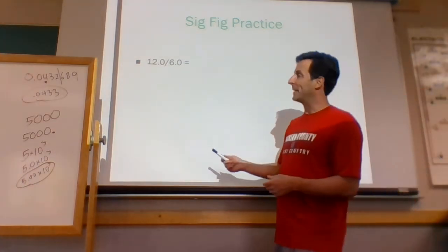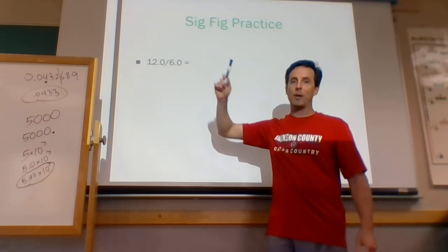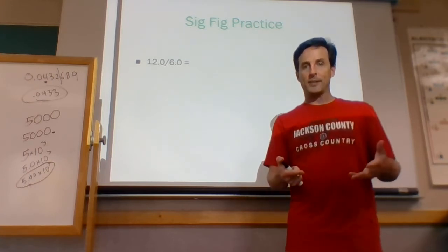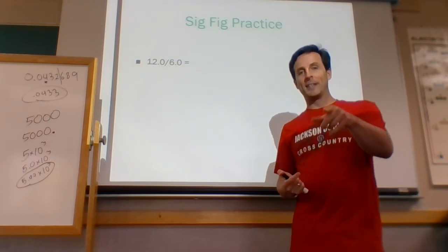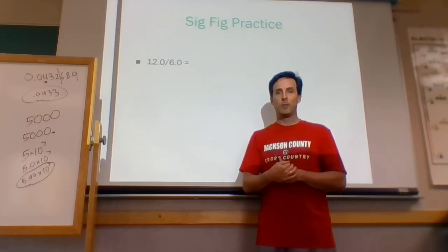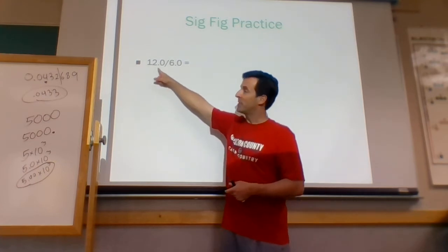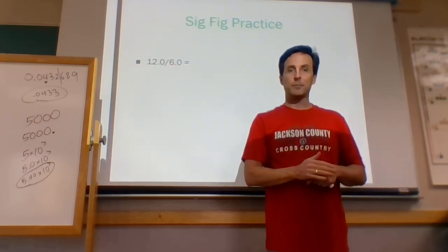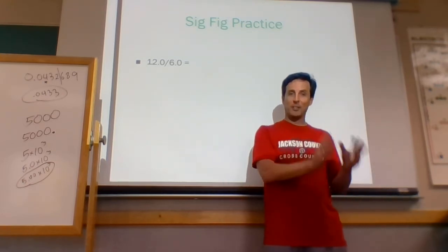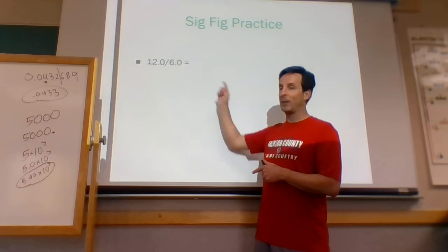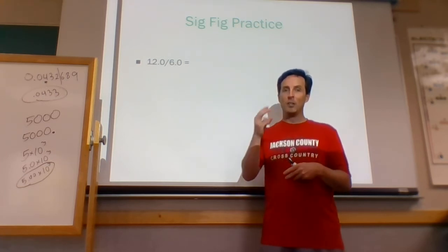If I type 12.0 divided by 6.0 into my calculator, it doesn't know how to report the answer — it's just going to give you the best answer it can. Your calculator will give you just 2. If you wrote that as the answer, you'd be wrong. The first number has 3 sig figs, the second has 2 sig figs, so when I divide them my answer should have 2 sig figs. My calculator says it's exactly 2, but I need to add one more digit: the answer is 2.0. That's the correct answer, maintaining 2 sig figs.